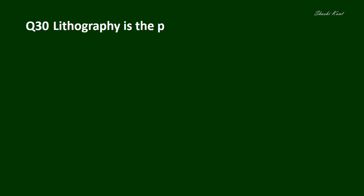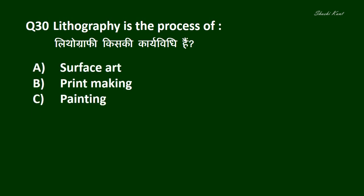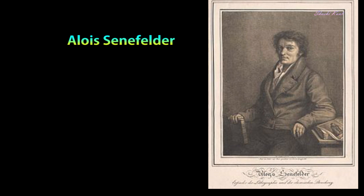Question No. 30: Lithography is the process of — Lithography की कार्यविधि है। A. Surface Art, B. Printmaking, C. Painting, D. Kinetic Art. And the correct answer is B. Printmaking. Lithography was invented in 1796 by German author and actor Alois Senefelder as a cheap method of publishing theatrical work. Lithography can be used to print text or artwork onto paper or other suitable material.